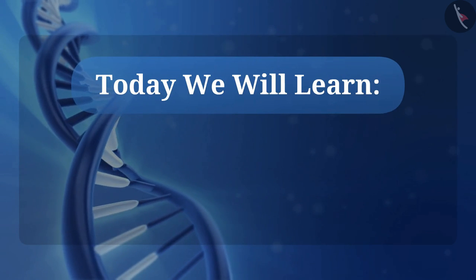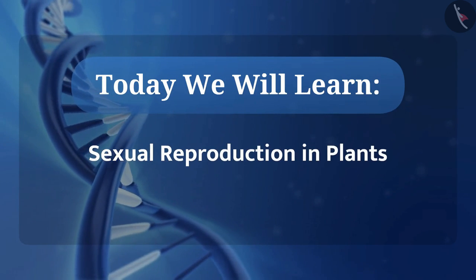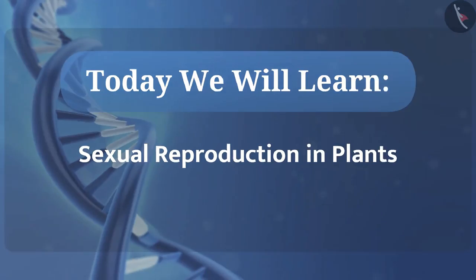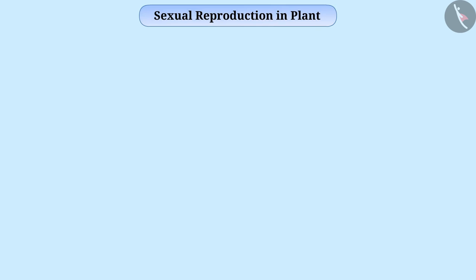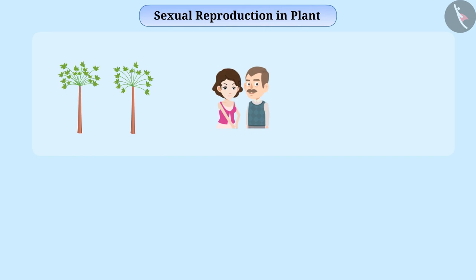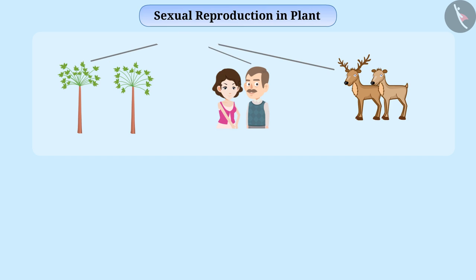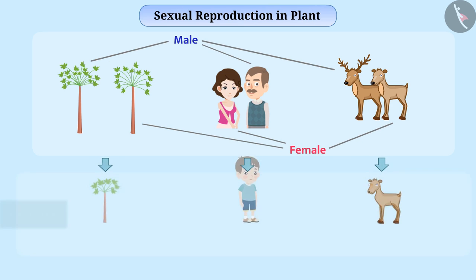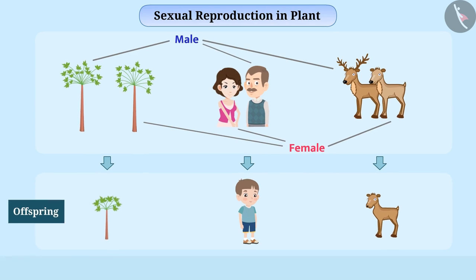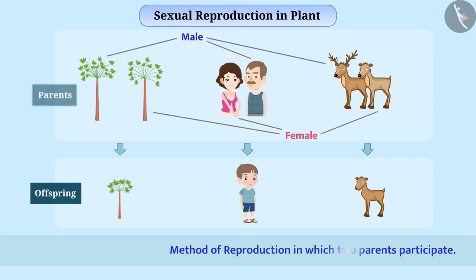Today we will learn sexual reproduction in plants. There are many organisms in the world such as flowering plants, humans, various animals, etc. which require male and females to produce offspring. Such a method of reproduction in which two parents participate is called sexual reproduction. Today we will discuss sexual reproduction in plants.